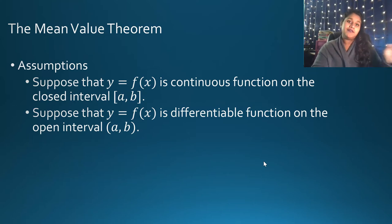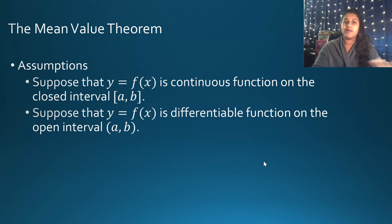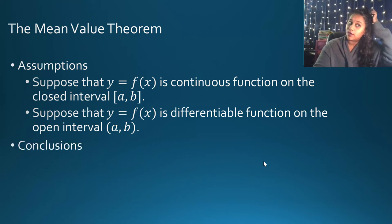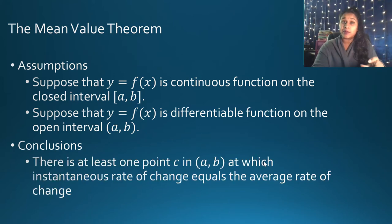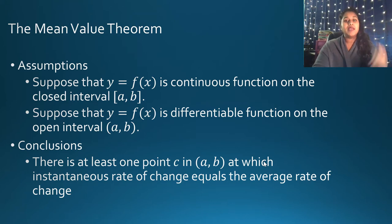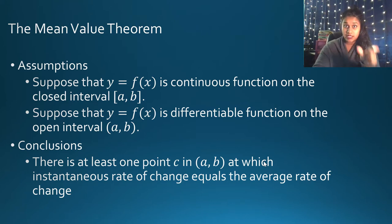If there is a funky point in that interval, then it is not differentiable in that interval. If you have domain errors, that's essentially what you're looking for. This means that there must be at least one point C, where C represents your x-value between the interval A to B.